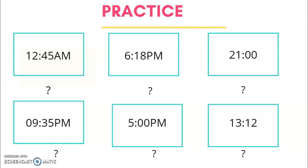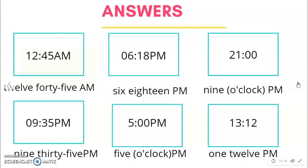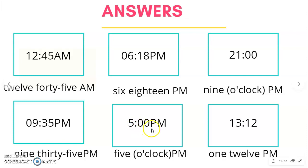Now here we'll do some practice. Please stop the video and try to read the times, including AM and PM, then continue the video. Okay, so these are the answers. Here we have 12:45 AM. Here we have 9:35 PM. Here we have 6:18 PM. Here I have 5 o'clock — I can say '5 o'clock in the evening' or '5 PM.'